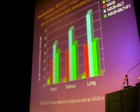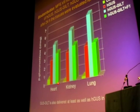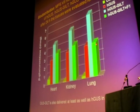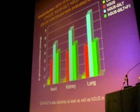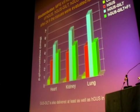GUS-GILT, in these three tissues, gives us a higher level of enzyme at the same dose. And GUS-GILT treated with endo F1 gives us almost the same uptake as the wild-type enzyme, and this is being mediated only by the GILT tag and not by the mannose-6-phosphate tag. We also found that GUS-GILT was delivered at least as well as H-GUS in all other tissues that we tested.